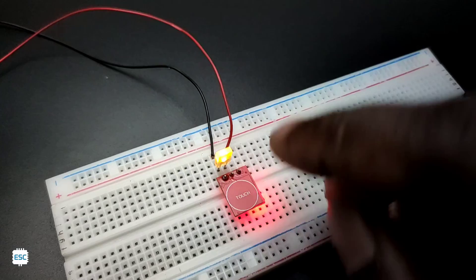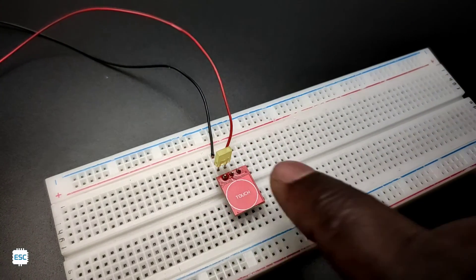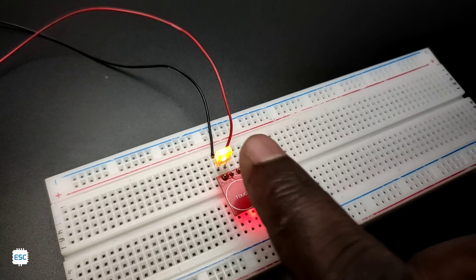Finally, I've connected an LED to the output of the module. And see it working. This is how to use the TP223 touch sensor module.